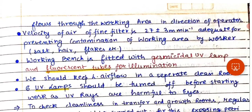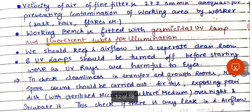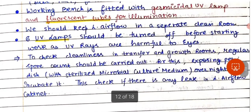The velocity of air through the fine filter is 27 to 30 meters per minute, which is adequate for preventing contamination of the working area by the worker. The working bench is fitted with a germicidal UV lamp and fluorescent tubes for illumination. The laminar airflow should be kept in a separate clean room.